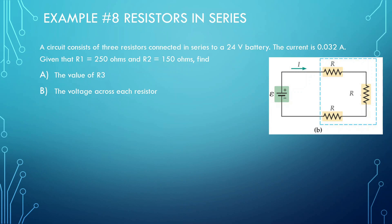A circuit consists of three resistors connected in series to a 24-volt battery. The current is 0.032 amps. Given that R1 is 250 ohms and R2 is 150 ohms, we have to find what R3 is equal to. It says find the value of R3.